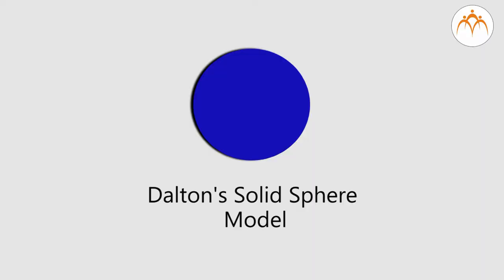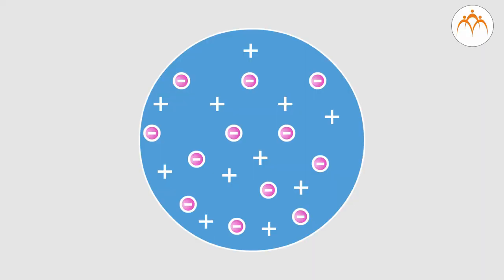In the previous video, we learnt about how the structure of atom developed from Dalton's solid sphere model to Thomson's Plum Pudding model.